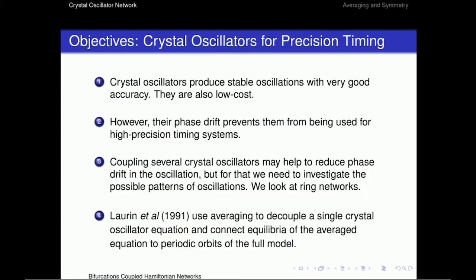Let me talk about the objectives now. Crystal oscillators are able to produce stable oscillations with very good accuracy, and they're also very low cost. But they have some phase drifts, and the phase drifts prevent them from being used for some high-precision timing systems. The idea here is that maybe by coupling these crystal oscillators, we may be able to reduce the phase drifts in the oscillation. In order to do that, we decided to study what kind of patterns are being seen in these ring networks, either unidirectional ring networks or bidirectional ring networks.